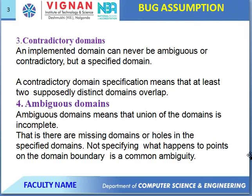Next: Contradictory Domain. Any implemented domain can never be ambiguous — meaning any domain implementation should be without ambiguity or contradiction. A contradictory domain specification means that at least two distinct domains overlap.